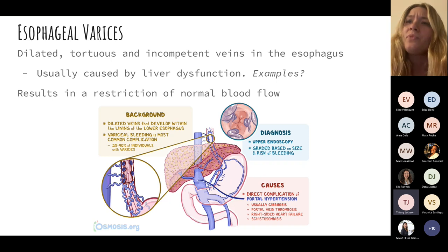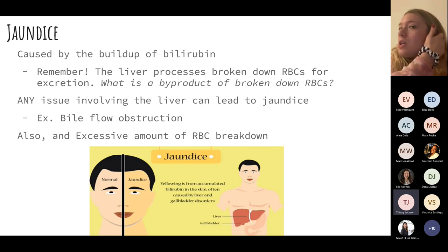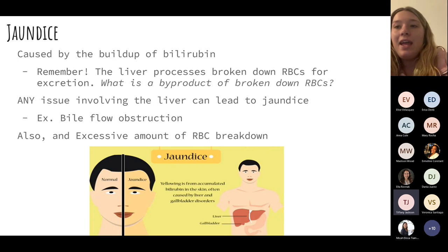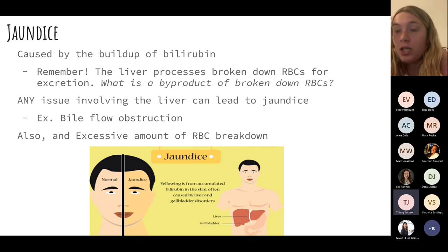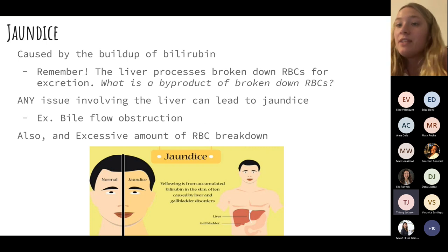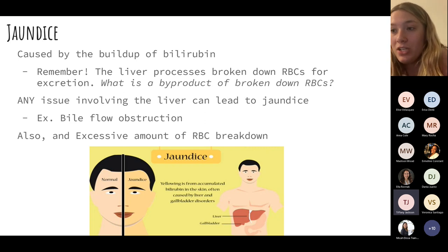If esophageal varices rupture, the patient is bleeding in the esophagus — making breathing very difficult and risking aspiration. Jaundice is caused by a buildup of bilirubin. Any liver issue — bile flow obstruction, blunt force trauma, or excessive RBC breakdown the liver can't keep up with — can cause bilirubin to accumulate, which is toxic. This presents as yellowing of the skin and sclera (the white part of the eyes). Check the patient's bilirubin and liver function tests (LFTs).